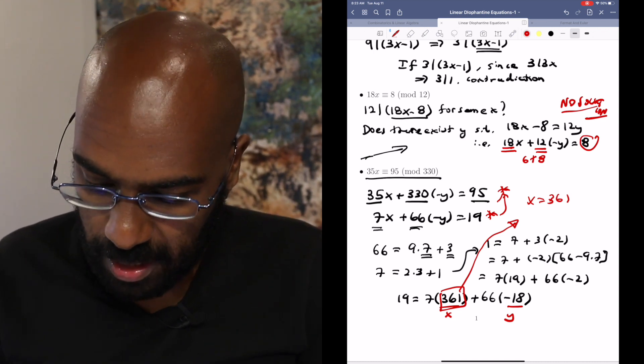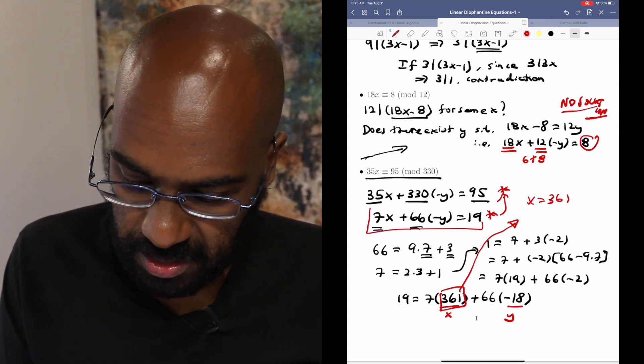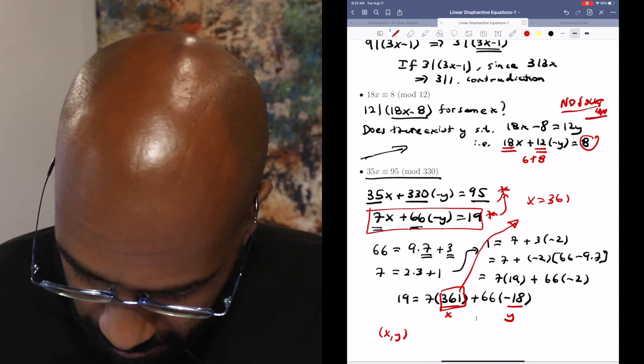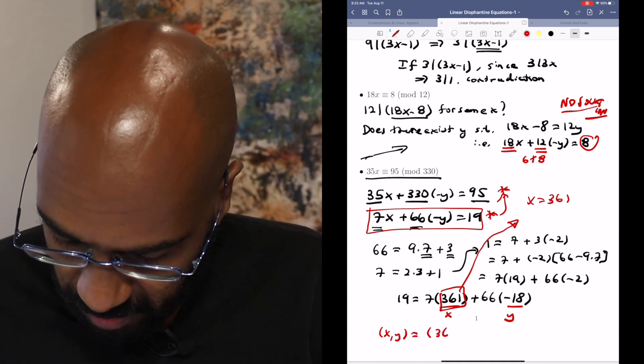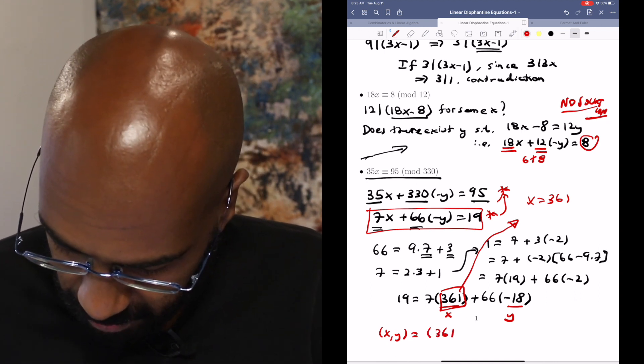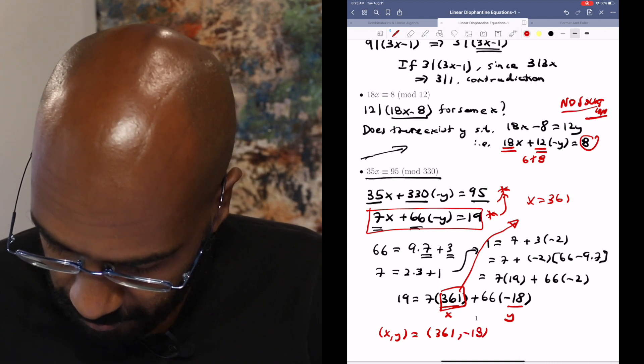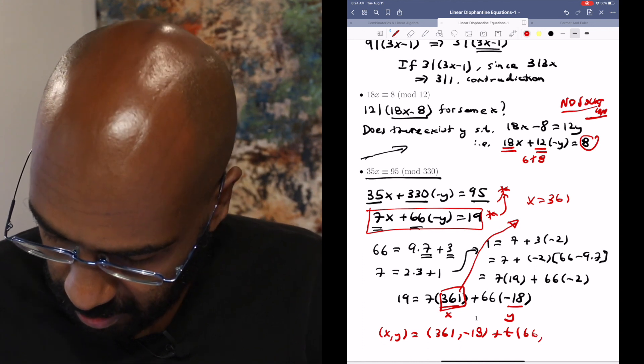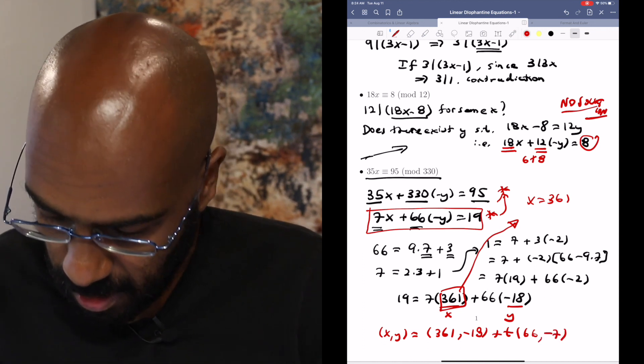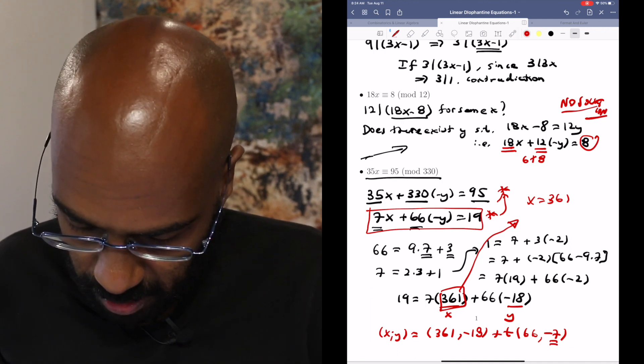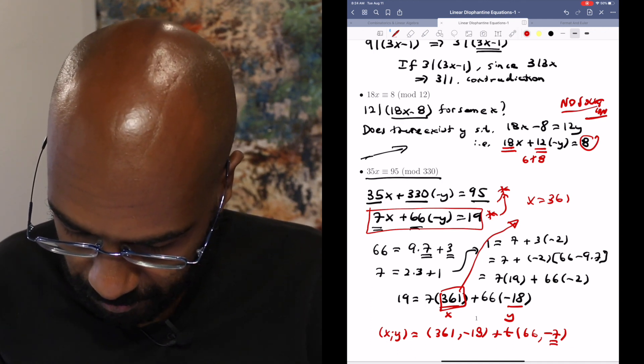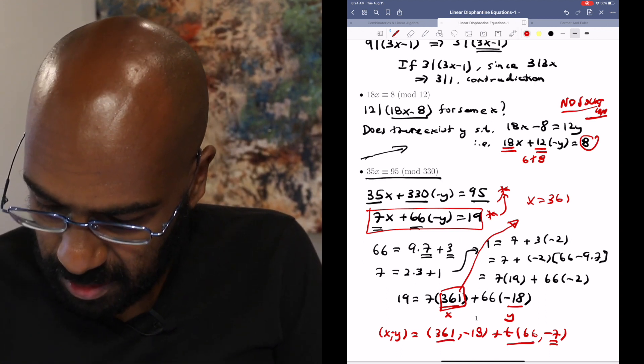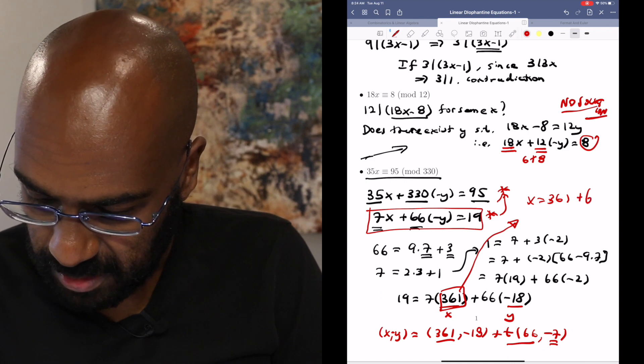Moreover, we actually know a complete set of solutions to this thing. Let's start off with the values that we had 361 and negative 18 and add in 66 and negative 7 as our values here. So these are solutions for negative y, x negative y.